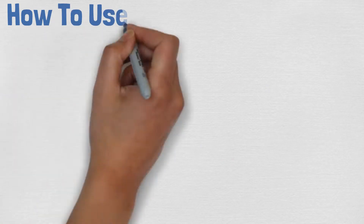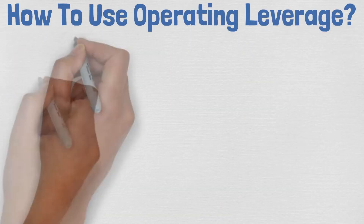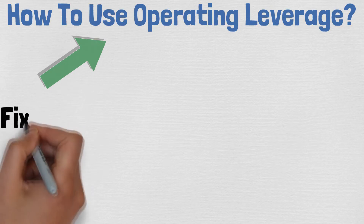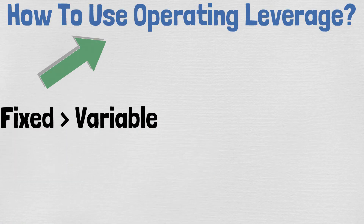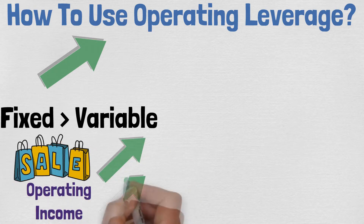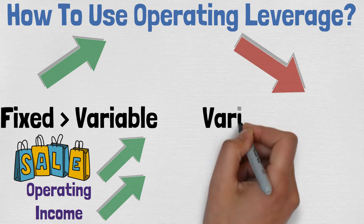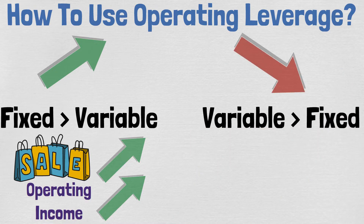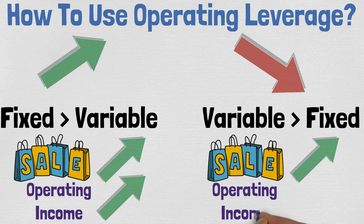So how can you use the operating leverage? Generally, the higher the ratio, the better. A high degree of operating leverage means that fixed costs are higher than variable costs, which means the company can increase its operating income by increasing sales. A low degree of operating leverage means variable costs are larger than fixed costs, and increasing sales does not increase operating income as much.